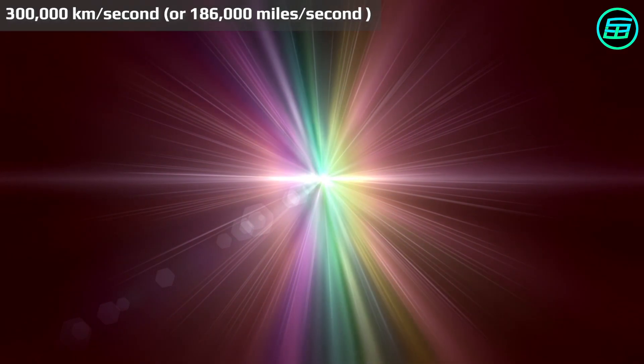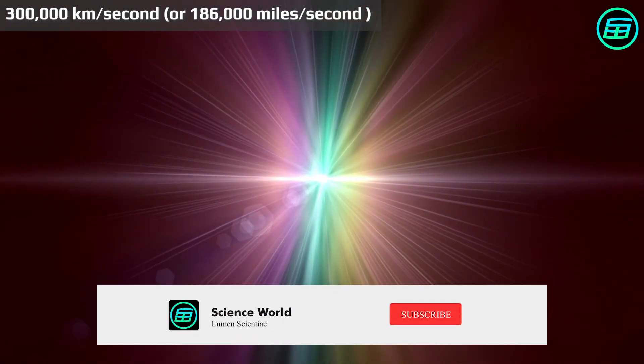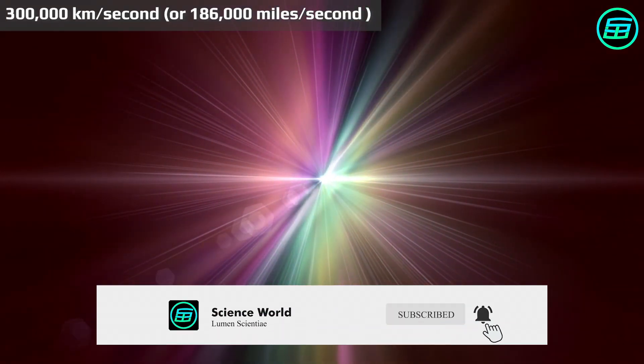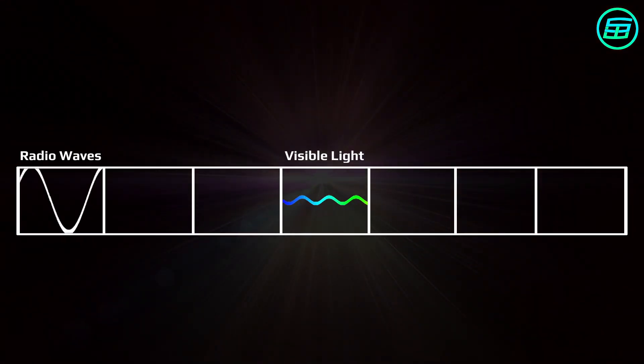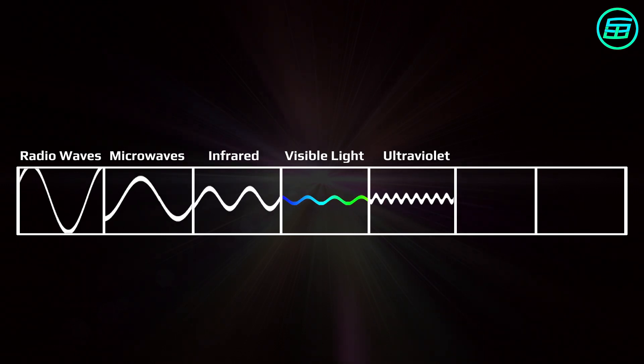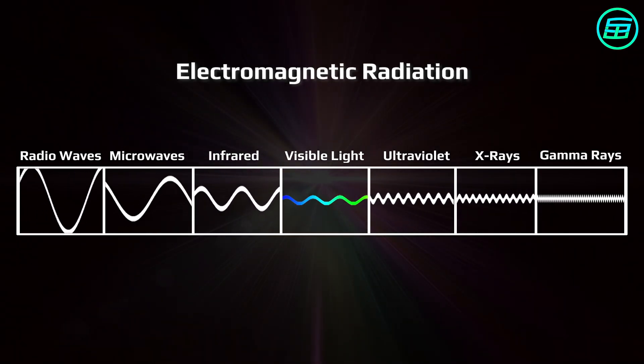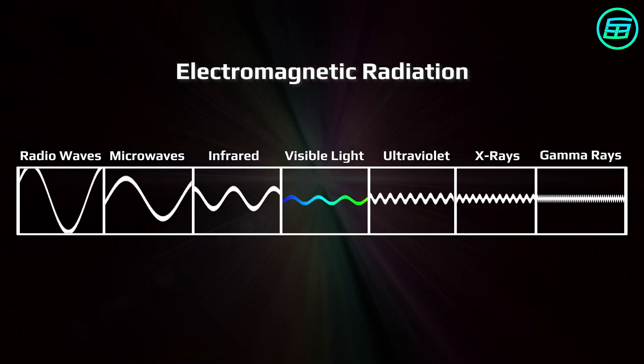Light is a type of electromagnetic radiation which travels about 300,000 kilometers or 186,000 miles per second in a vacuum. As well as visible light, radio waves, microwaves, infrared, ultraviolet, X-rays, and gamma rays are types of electromagnetic radiation.